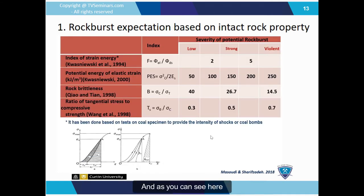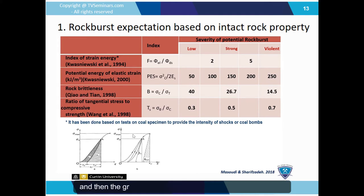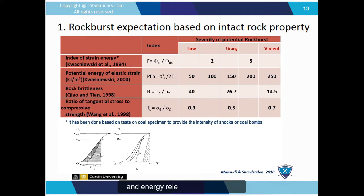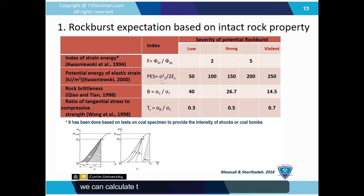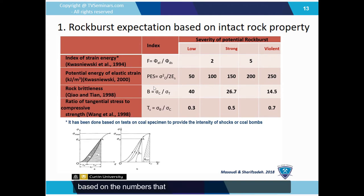For rock burst calculation based on intact rock properties, four methods have been developed so far, using graphs based on the energy stored in and released from the rock. Based on those four methods, we can calculate an index to show the severity of the rock burst — categorized as low, strong, or violent conditions based on the numbers calculated from those factors.